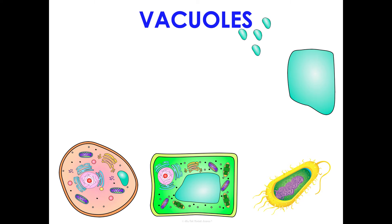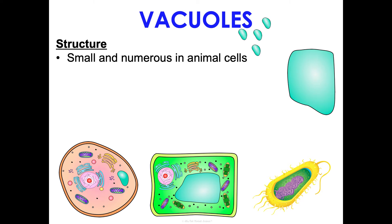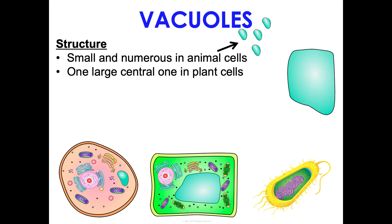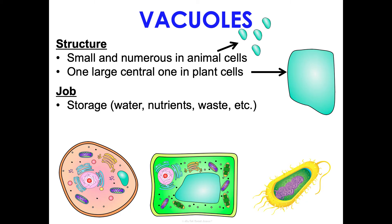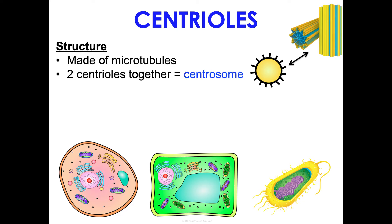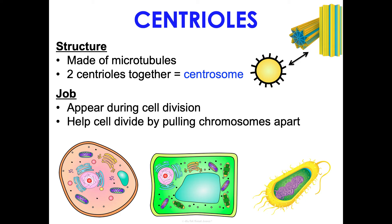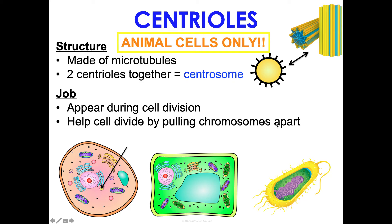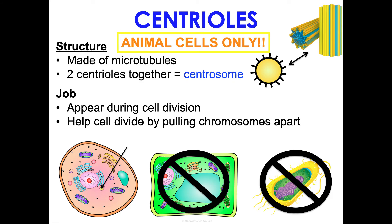Vacuoles: in animal cells they are smaller and numerous, while in plant cells there is typically one giant central vacuole used for storage. Centrioles are made of microtubules; two centrioles together are called a centrosome — the terms are sometimes used interchangeably. Centrioles appear during cell division and help the cell divide by pulling chromosomes apart, which we'll cover in mitosis in concept three. Centrioles are animal-cell-only structures; plants have a different microtubule-based structure for cell division.